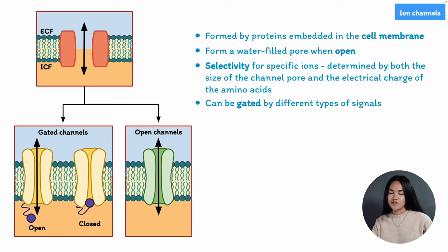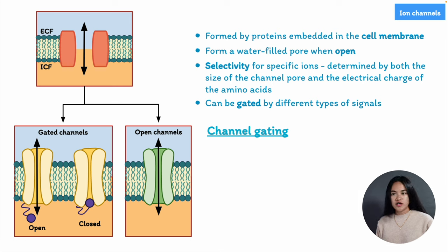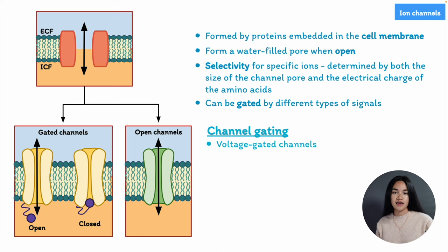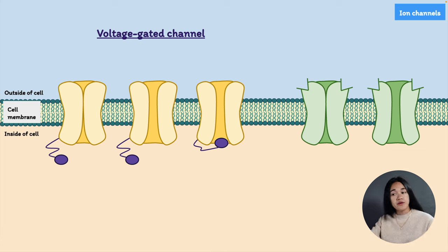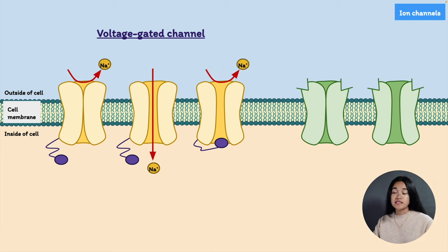The opening or closing of ion channels is known as channel gating. Ion channel gating can be regulated by various types of stimuli. Starting with voltage-gated channels — these are regulated by changes in the cell's membrane potential, think your neurons and your muscle cells. Membrane potential refers to the difference in electrical charge between the inside and the outside of the cell. Resting membrane potential is the voltage difference across the cell membrane when cells are at rest.